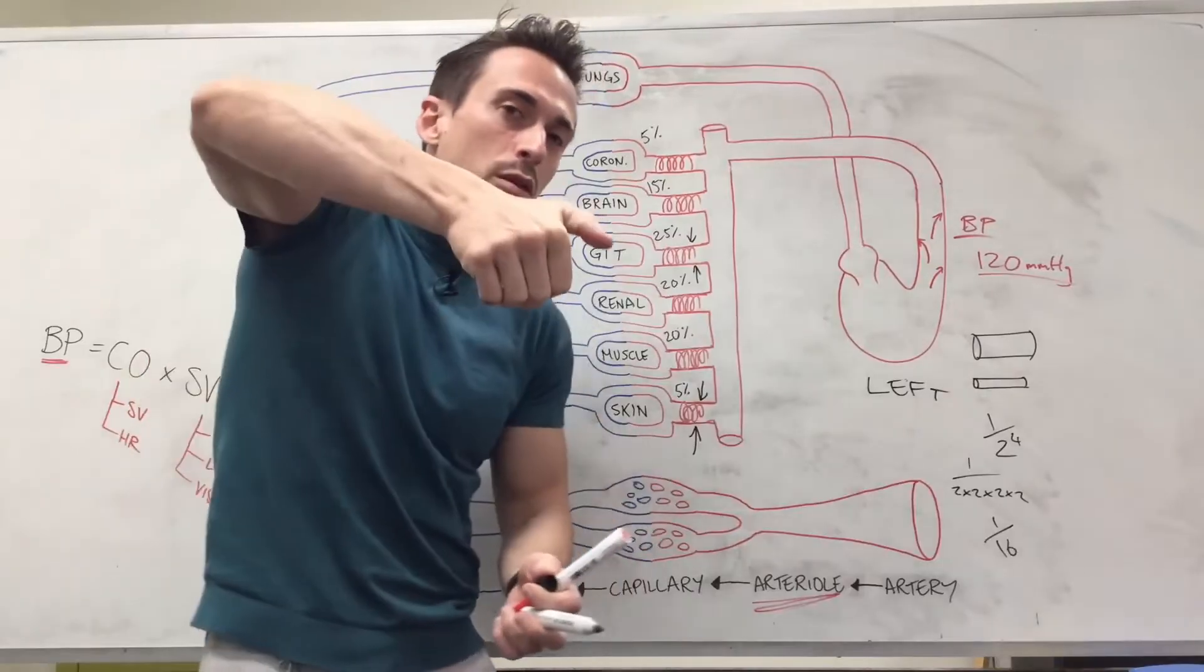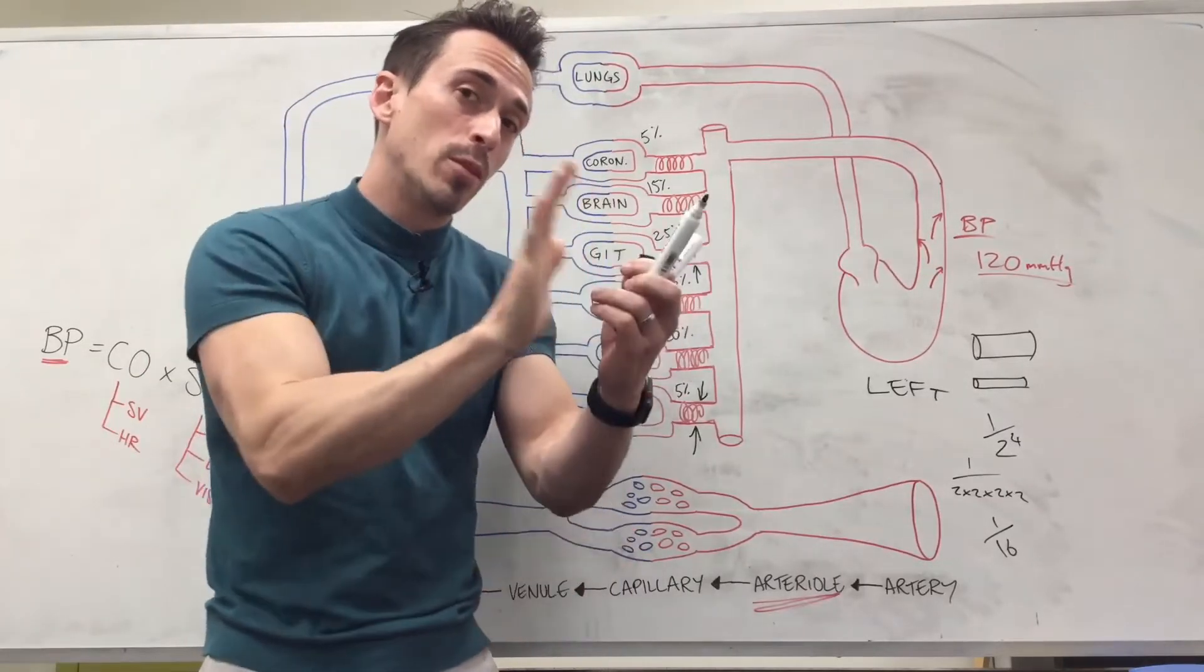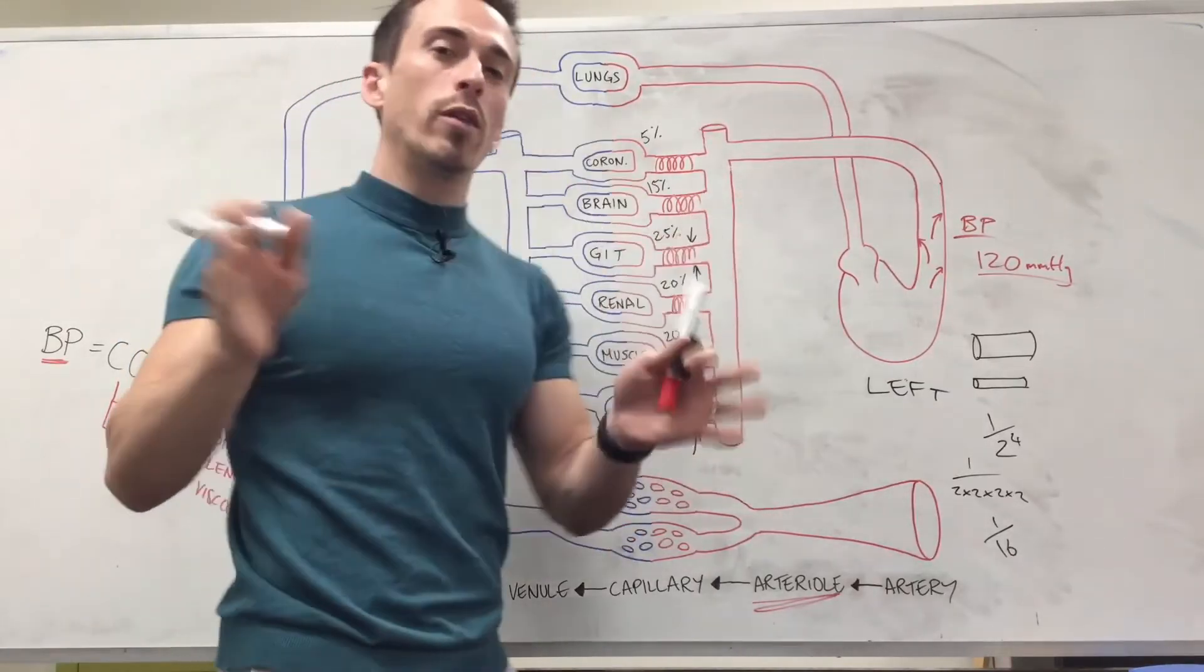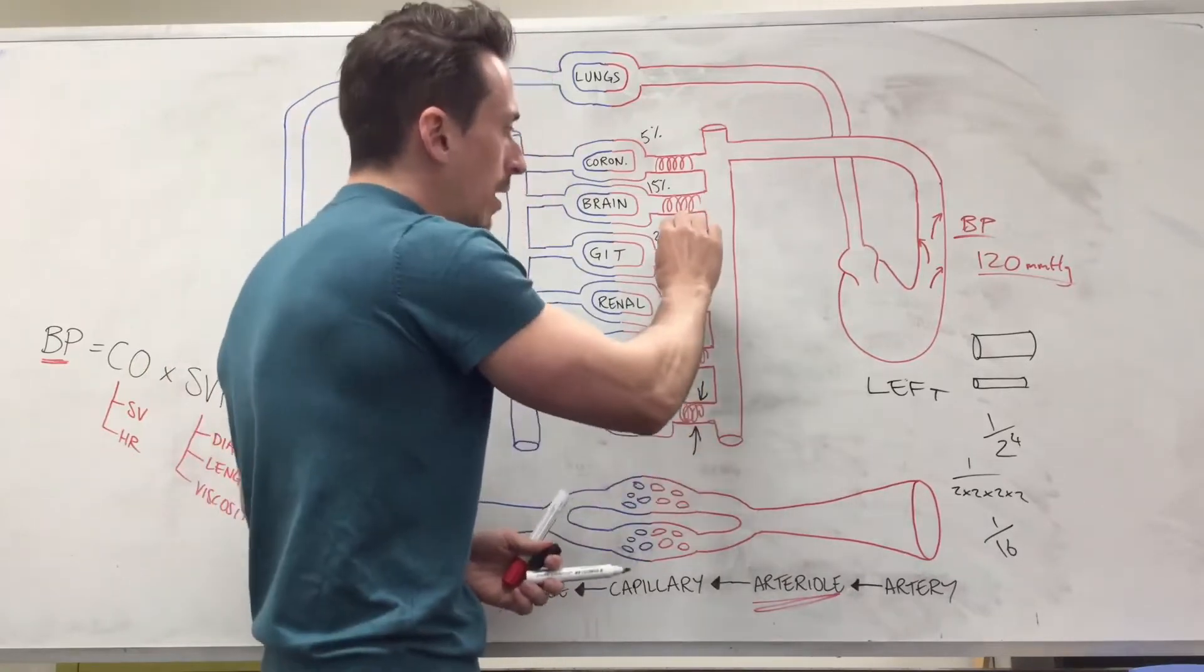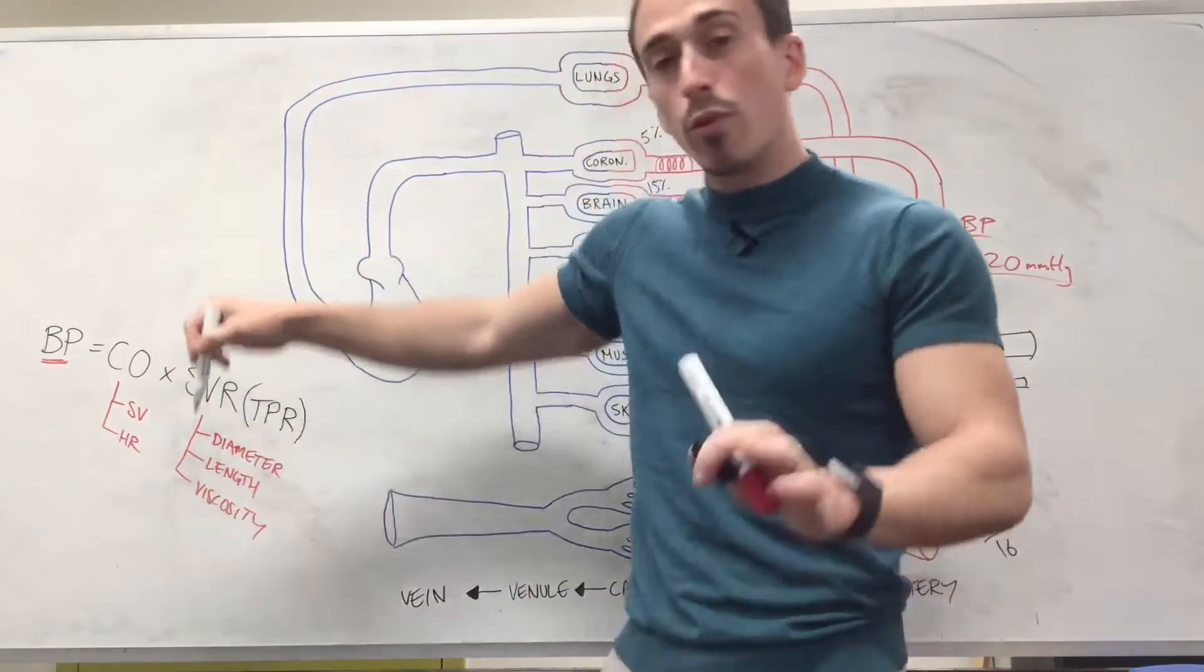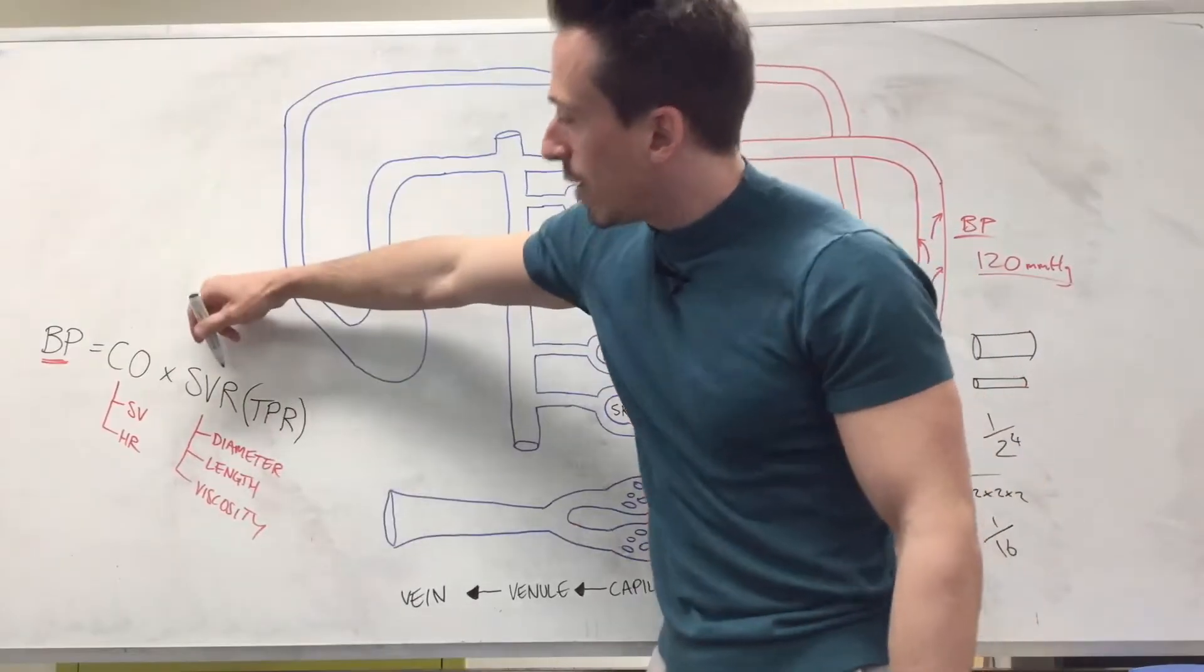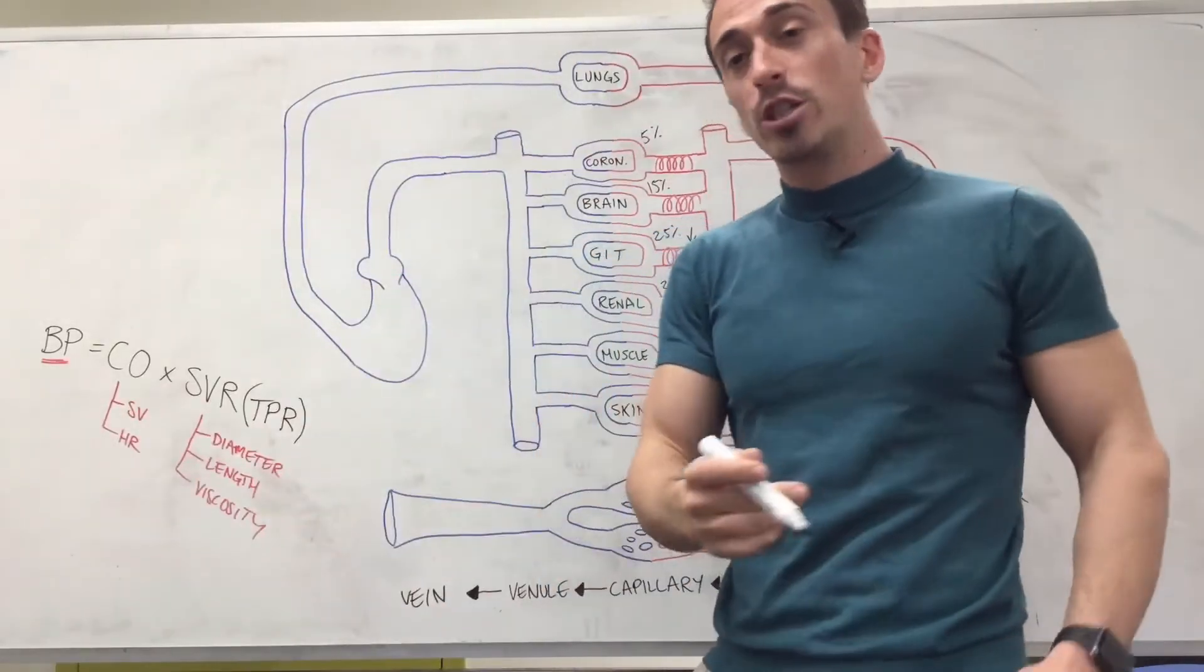When you put your thumb on the end of a hose, this is what you're effectively doing here: the pressure backs up and increases. It backs up, backs up, backs up, increases. What have we now effectively done? Simply by changing the diameter of these tubes, we've increased blood pressure. So systemic vascular resistance, also known as total peripheral resistance, if you decrease the diameter of it, you're going to increase the resistance. You increase the resistance, you increase blood pressure.